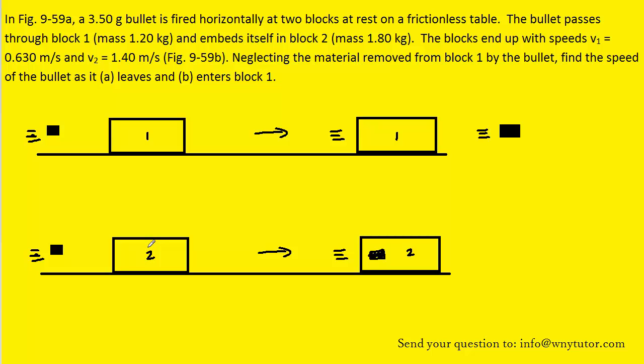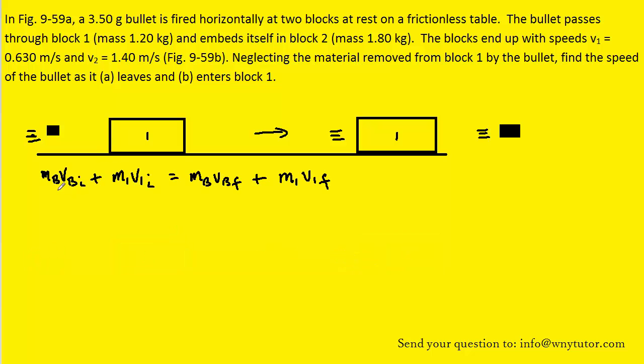Now in both collisions, momentum will be conserved, so we're going to use the principle of the conservation of linear momentum to solve this question. Let's look at that formula for the first collision. Notice the subscript b stands for bullet, and the subscript 1 stands for box 1.